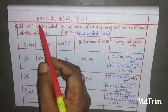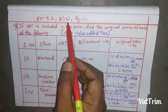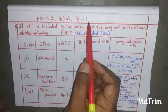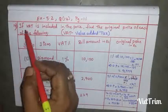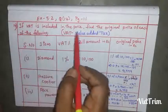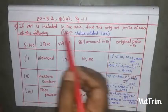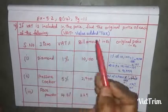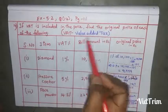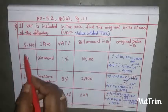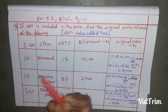Good morning students. Today let us see Exercise 5.2, Question number 14, page number 111. If VAT is included in the price, find the original price of each of the following. Here value added tax is given.